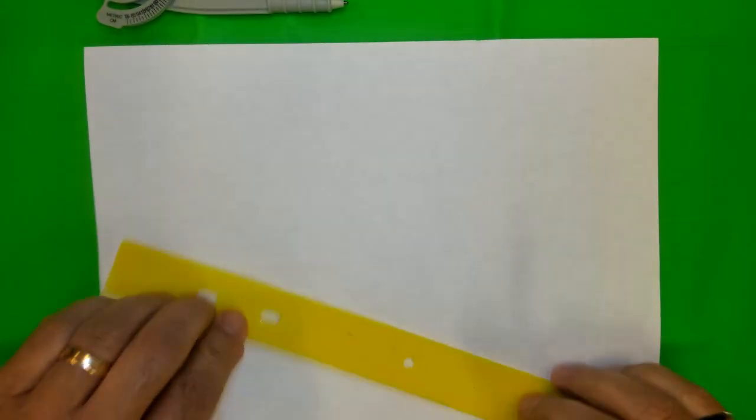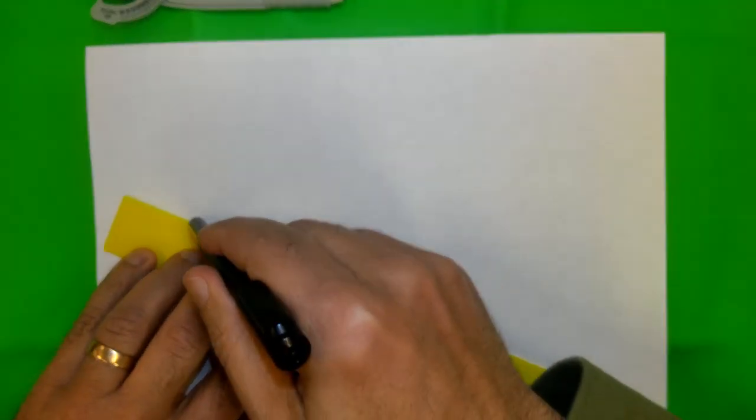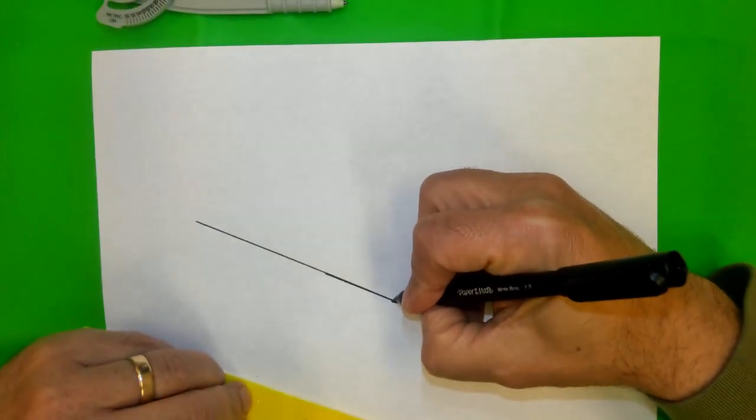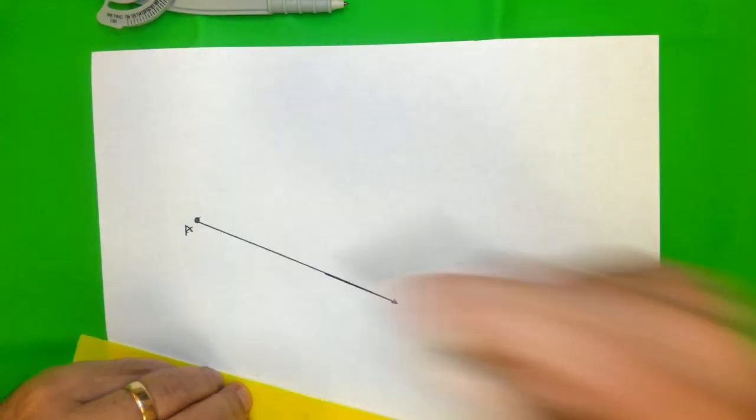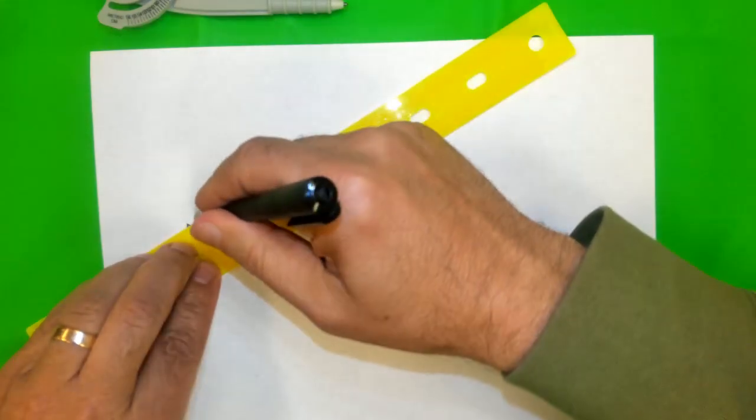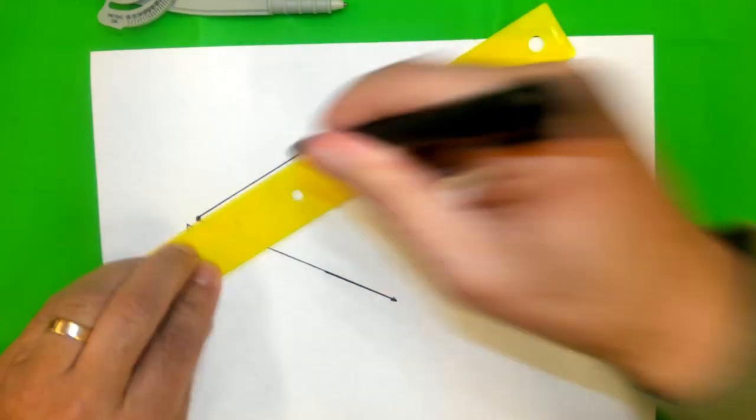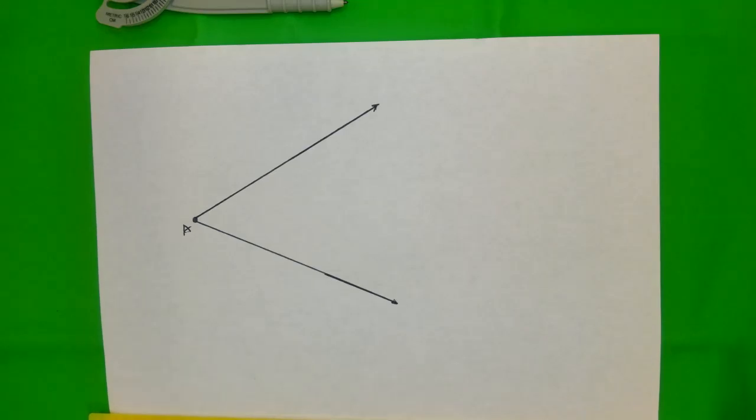So first of all, let's have an angle. And if you remember, an angle is formed by two rays. So I'm going to have this ray here. Let's say this is point A and another ray. This one. Okay, and now we have an angle.